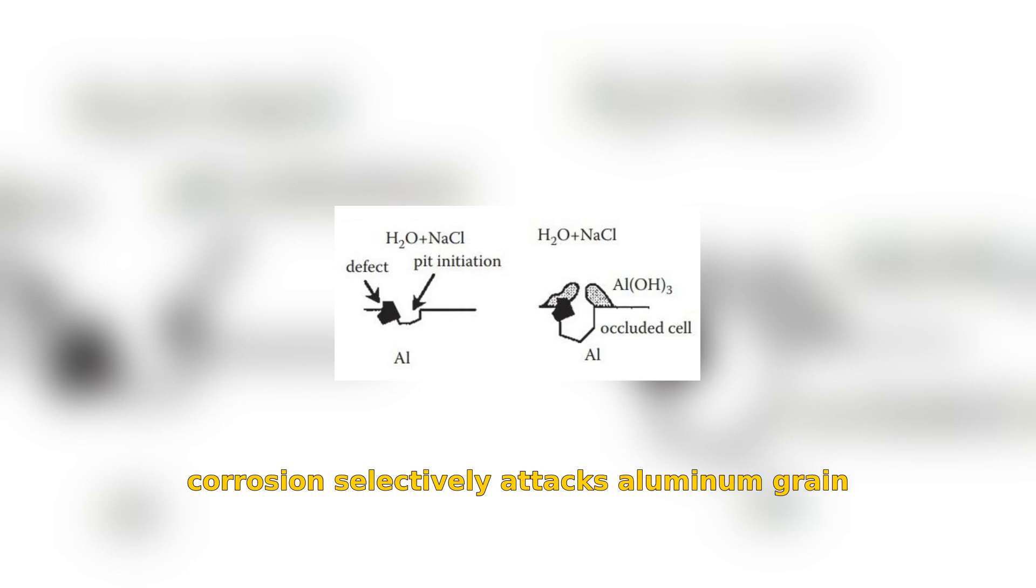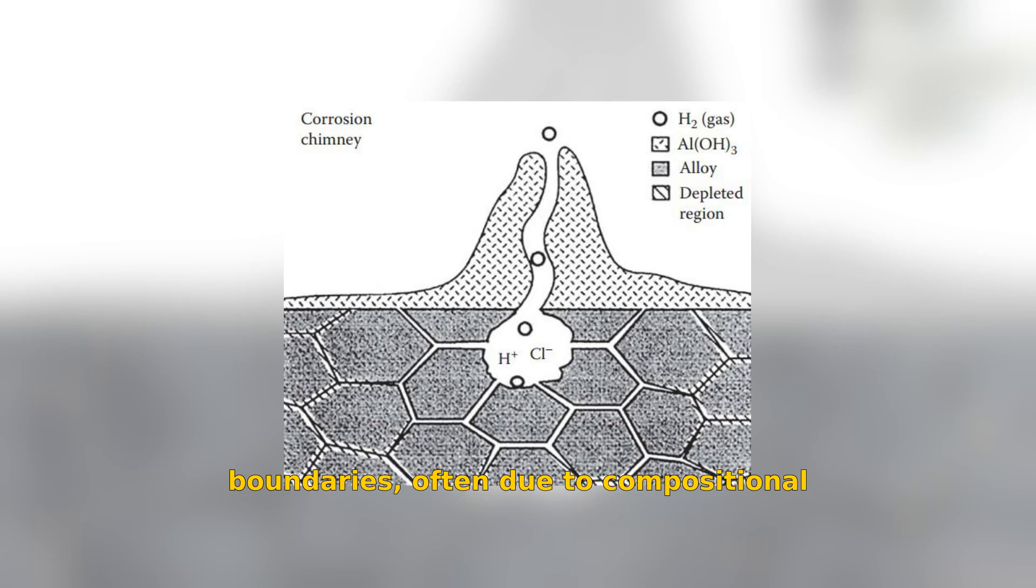Intergranular corrosion selectively attacks aluminum grain boundaries, often due to compositional differences caused by processes like heat treating or welding, leading to preferential division at these areas.